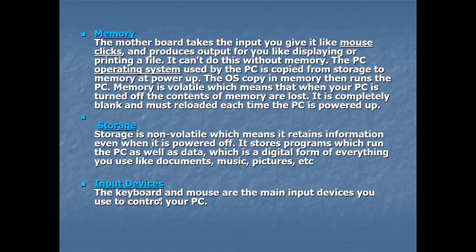Think of memory like a plate of food: when you eat, you first put food on the plate and eat from there. Similarly, when a computer runs software like Microsoft Word, that software first takes up space in memory, and from memory the CPU accesses it to work. Memory is where currently running software is stored temporarily so the CPU can use it.